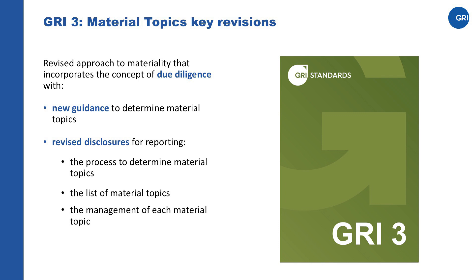GRI 3 also contains revised disclosures for reporting the process that an organization has used in determining its material topics, the list of material topics, and how it manages each of its material topics. The final disclosure — the management of material topics — has been aligned more closely with the expectation of due diligence, and it requires more specific information on the actions to prevent, mitigate and remediate negative impacts.